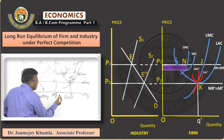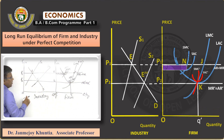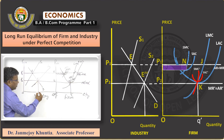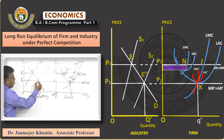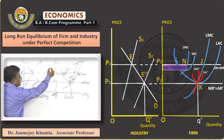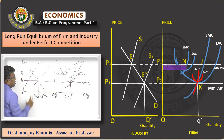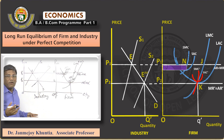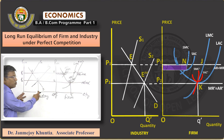At the industry level, the rate of output will be uppercase Q-dash, corresponding to the equilibrium point E double-dash, where the demand curve of the industry meets the new supply curve S2. As you know, the industry rate of output is the sum of the firms' output, so the industry output will be higher.